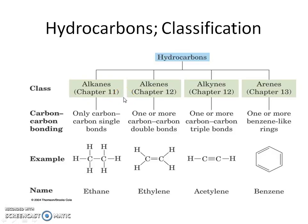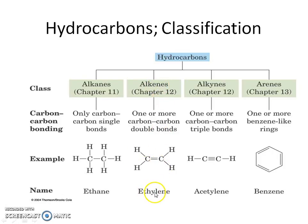Hydrocarbons can be classified as alkanes, alkenes, alkynes, and arenes. Compounds containing carbon-carbon single bonds are known as alkanes — methane, ethane, and butane are examples. Alkenes are compounds which contain carbon-carbon double bonds; ethylene, propylene, and butylene are examples.